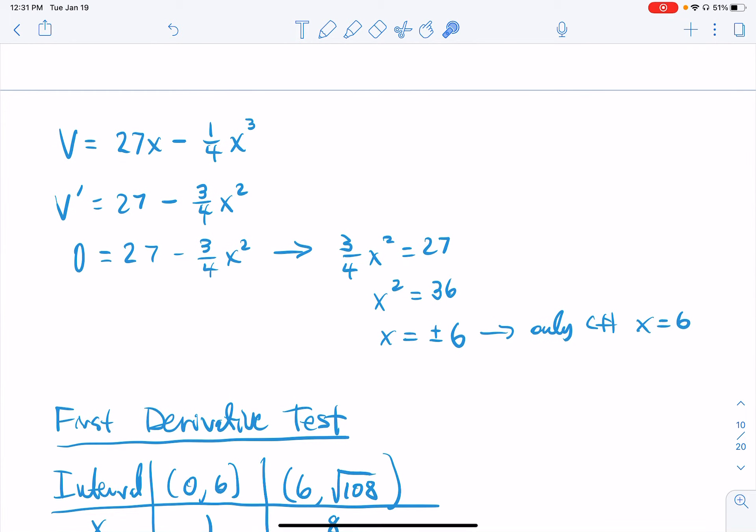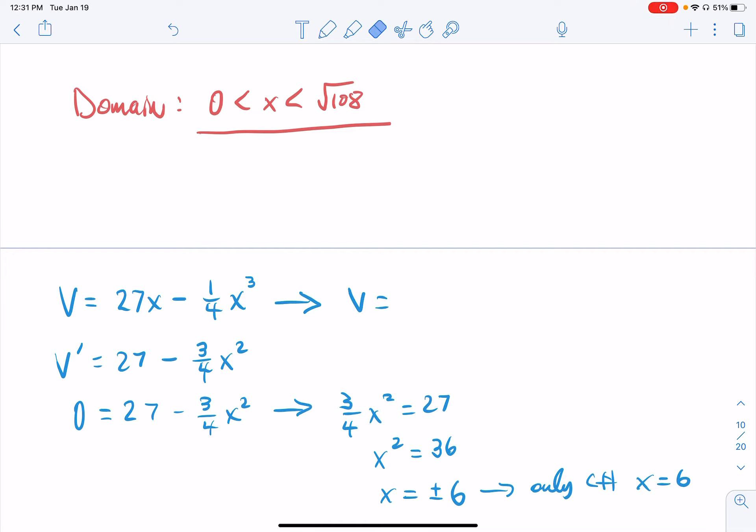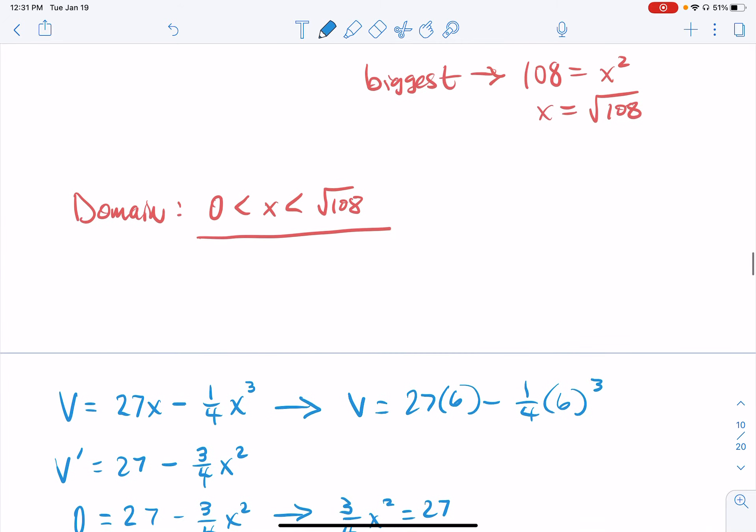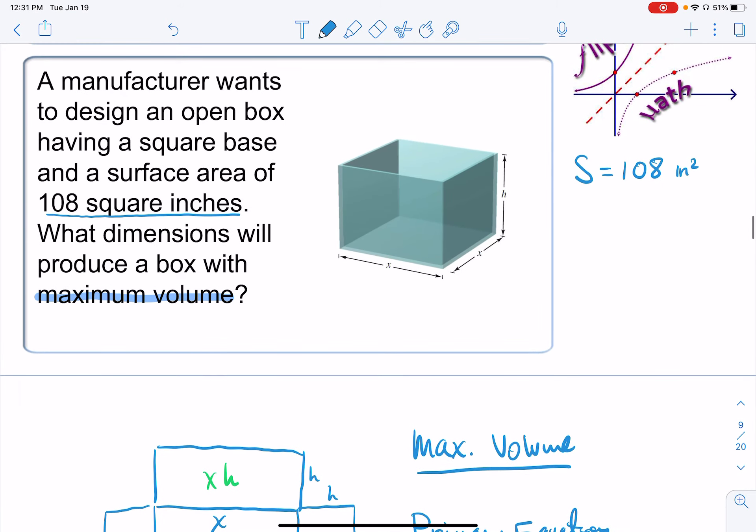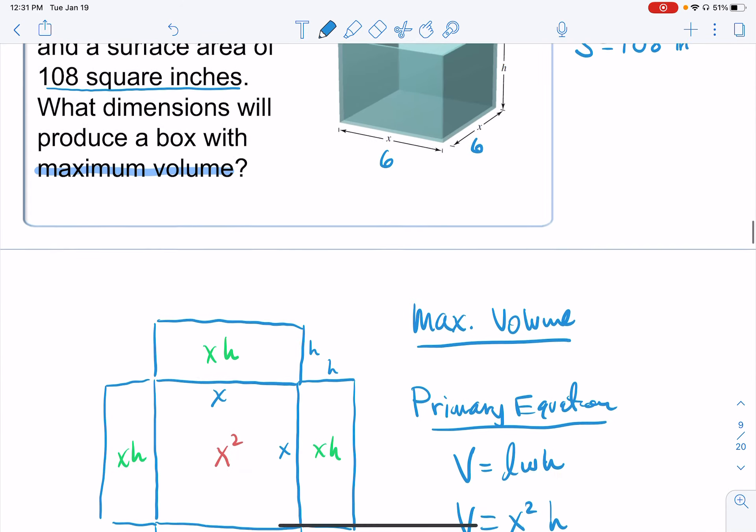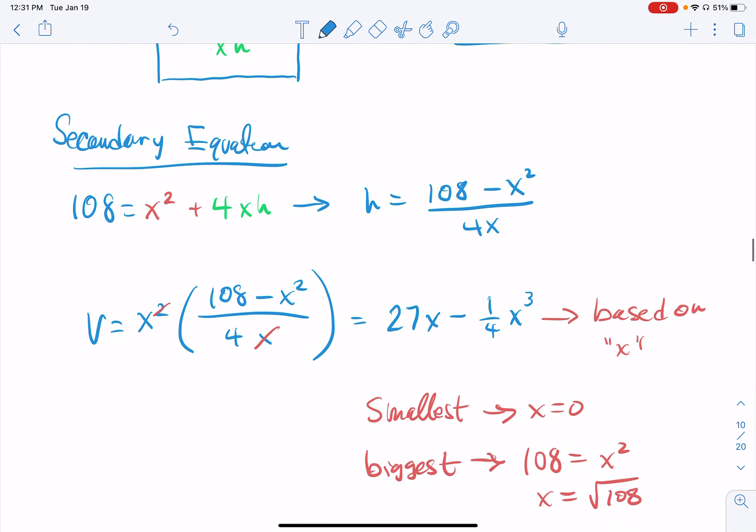Here's my volume equation. So if I plug in 6 here, v equals, let's see, 27 times 6 minus 1 fourth times 6 to the third power. Yeah, I guess I could do that. Or I could just go that this thing is a 6 by 6. And then, didn't we have an equation for this? For the height.